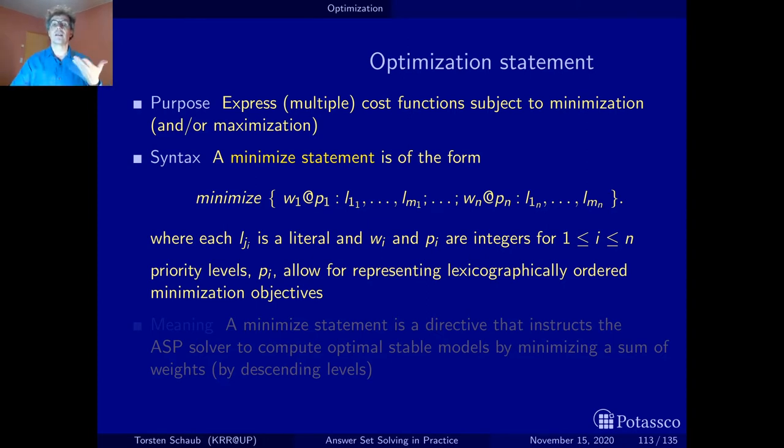What then happens is called lexicographic optimization. So it's like in a telephone book. You first look at the cost function with the highest priority and then you compare two stable models, and if they are equal then you look at the one with the next highest priority, and if they are equal you look at the next highest priority, and then once there is a change when one is smaller than the other then this is preferred to the other one.